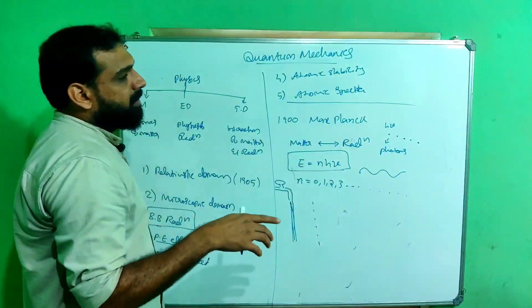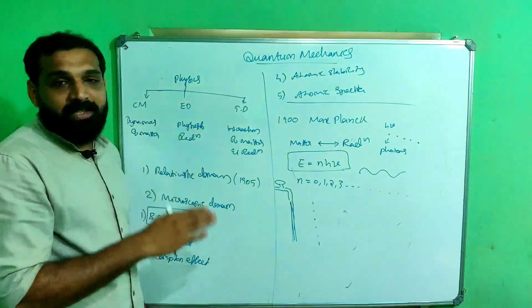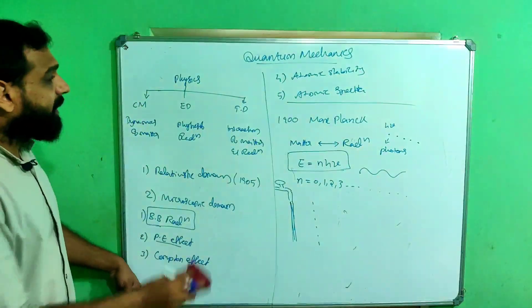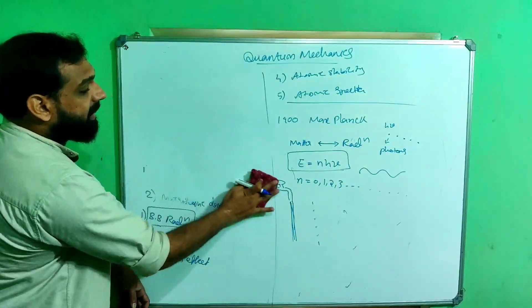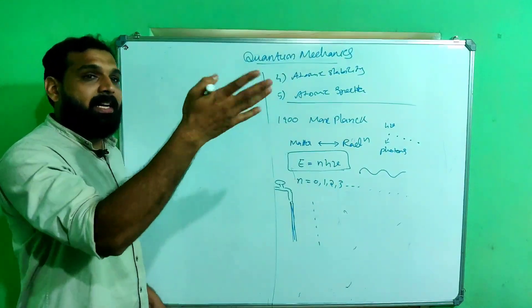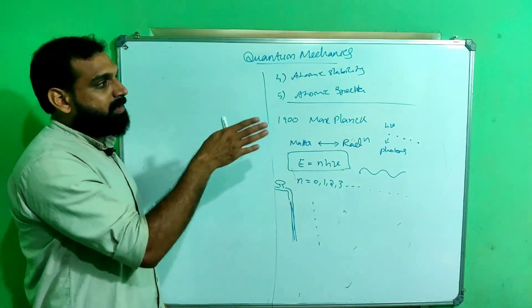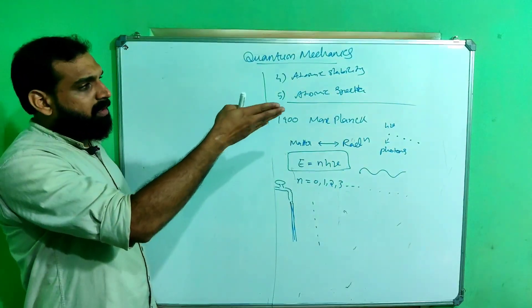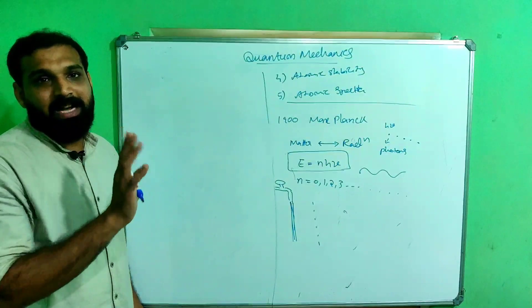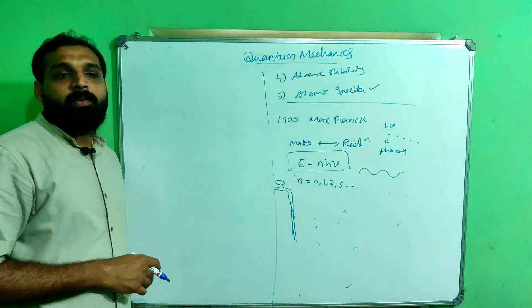Bohr used this quantization principle to explain the structure of the atom, and he successfully explained the hydrogen atom and hydrogen-like atoms. That should be noted — Bohr explained only hydrogen and hydrogen-like atoms. His model couldn't explain other atoms; there are around 92 elements. So other quantum mechanical models were later introduced to explain such atoms. Atomic spectra was also successfully explained using quantum mechanics.